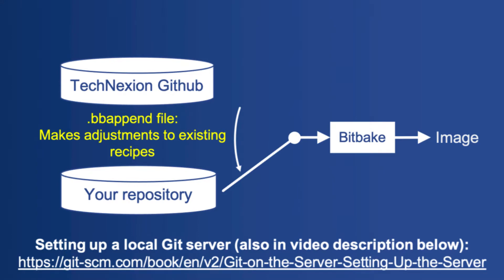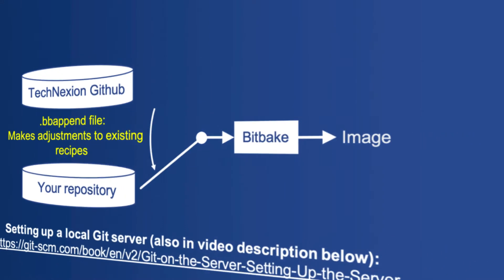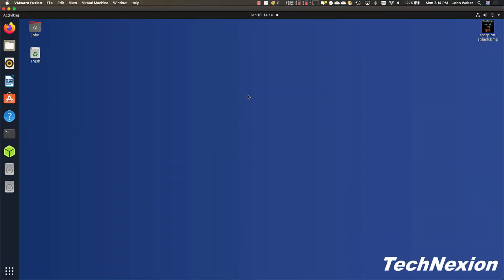OpenEmbedded provides a very nice mechanism for making small changes to recipes using something called bbappend. Remember when I said that metadata in OpenEmbedded is organized in layers? A bbappend file acts as an overlay on top of an existing recipe, allowing you to tweak the recipe itself. So now we're going to do this. First, we're going to get a special branch of the U-Boot repository set up so that will be our source for our recipe.